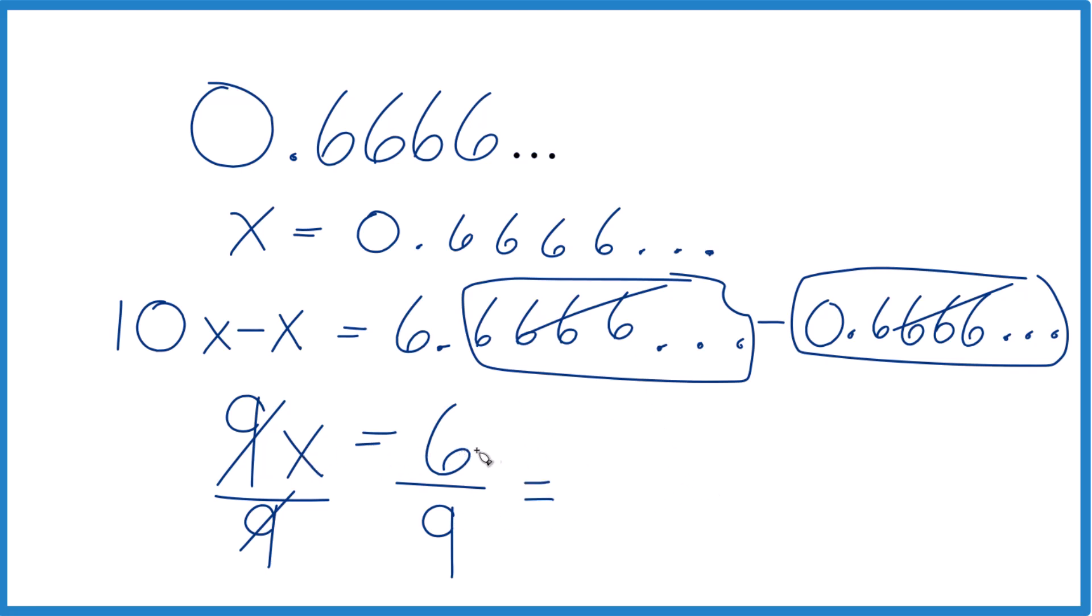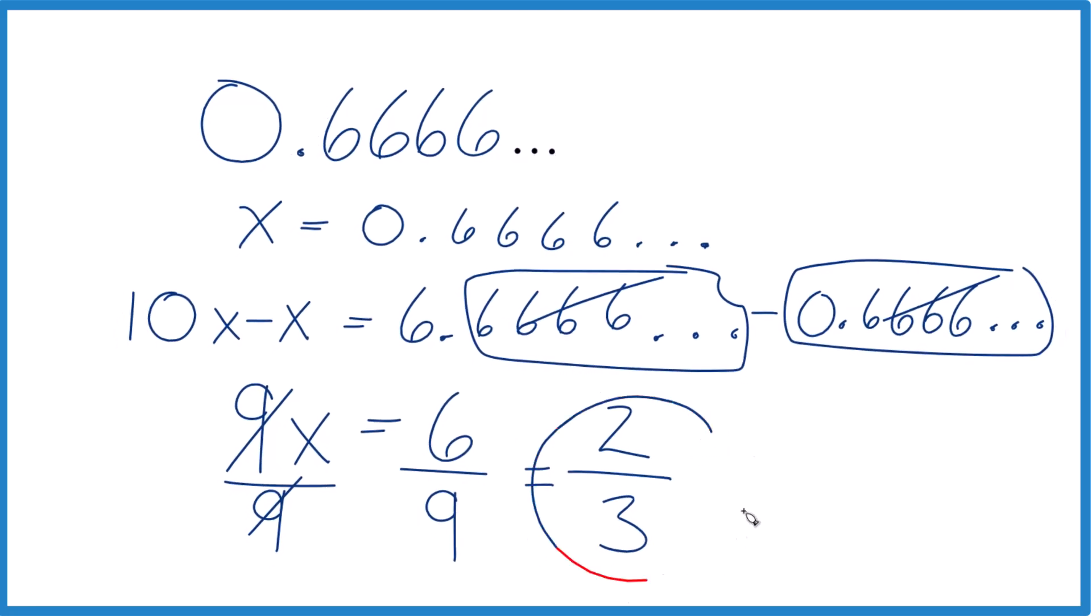And we could simplify that because 3 goes into 6. 2 times 3 is 6. So 6 divided by 3 is 2. 9 divided by 3 is 3. And we end up with two thirds.